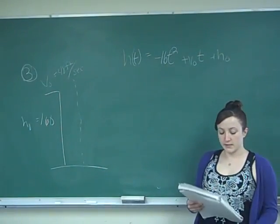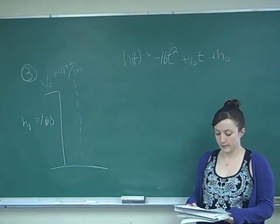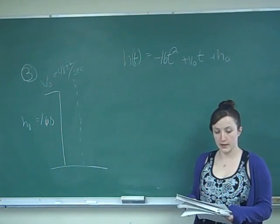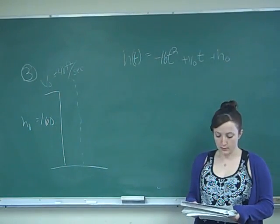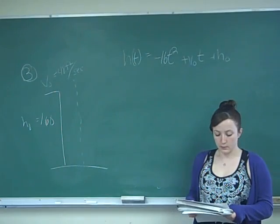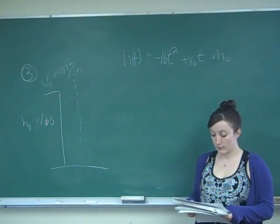This is problem number three. It reads, a frustrated student threw his calculus book upwards off of a roof of a building 160 feet high with an initial velocity of 48 feet per second. With what velocity did the book hit the ground below?